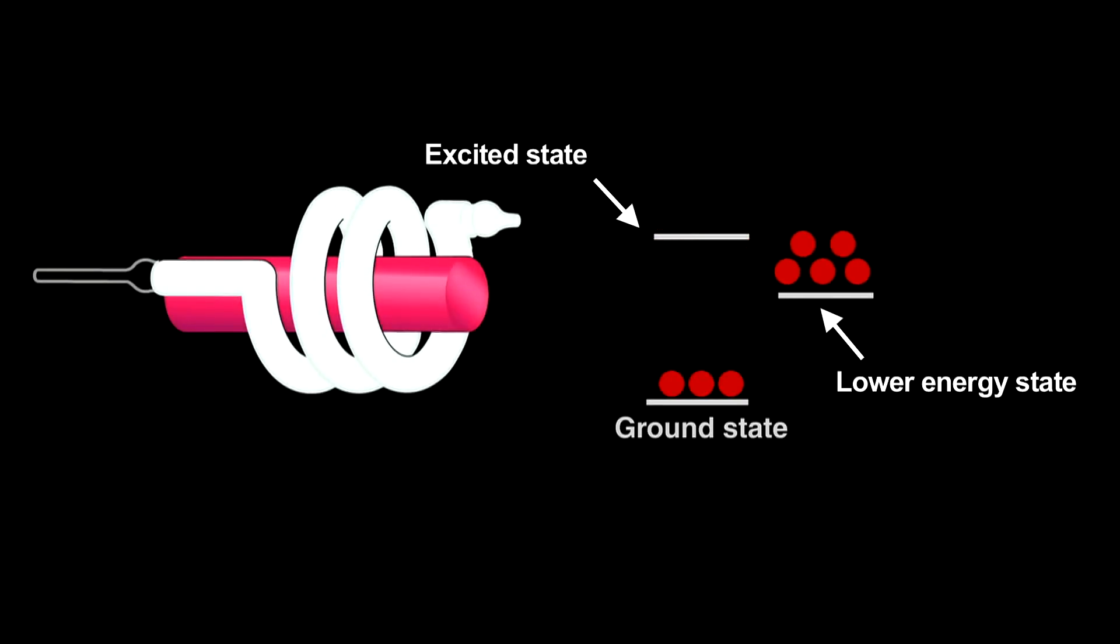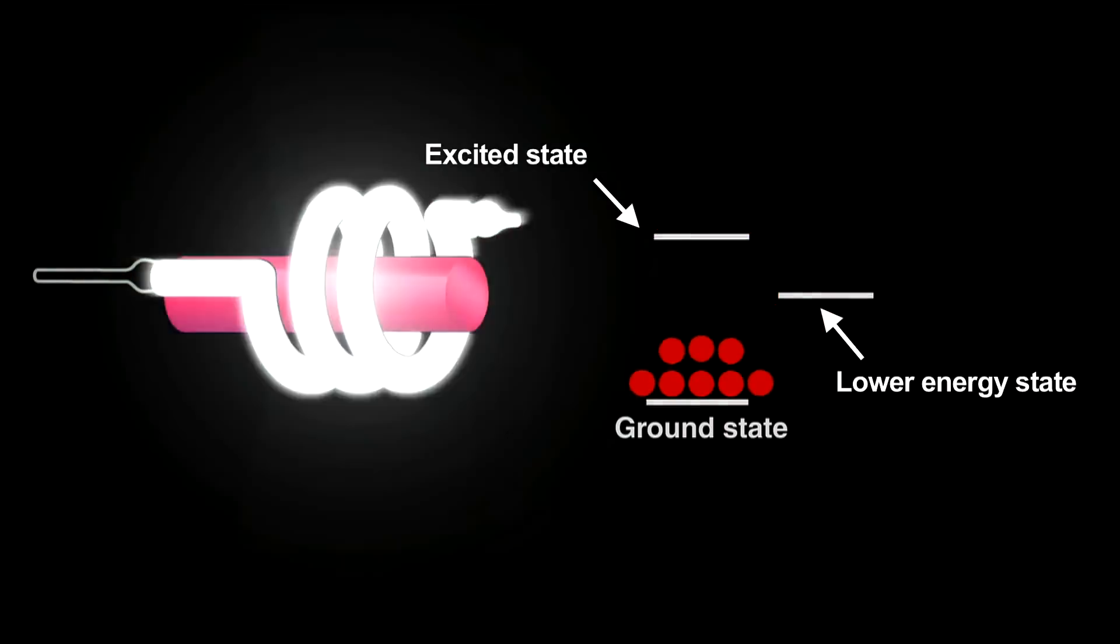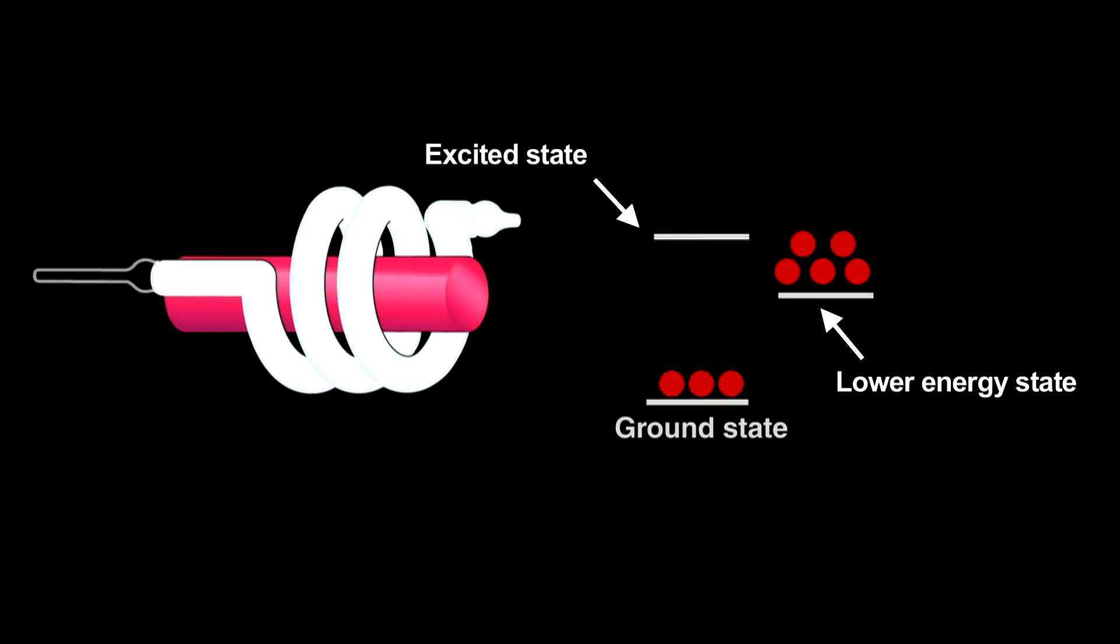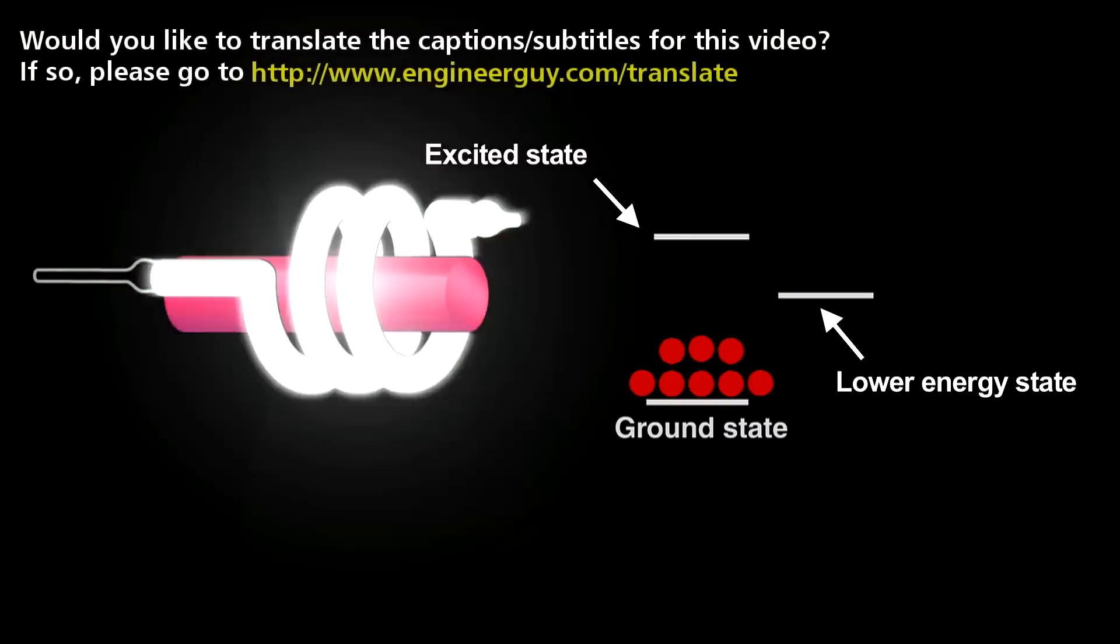Electrons from a population inversion returning to the ground state release light that starts an avalanche called stimulated emission. The photon produced when an electron decays induces other excited electrons to simultaneously decay and release nearly identical photons. That creates coherent light, meaning that the crests and troughs of every light wave in the beam match up.